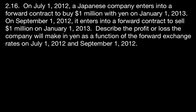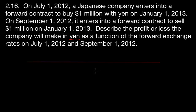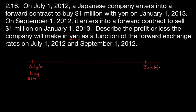So our profit and loss are going to be in yen — pay attention to that. Let's do our timeline so we can describe it a little better, keeping in mind that we're concerned about yen. In July of 2012, we entered into a forward contract to buy $1 million with yen, so we are long $1 million. If the US dollar increases in value against the yen, we win; if it decreases in value, we lose. That is for delivery in January of 2013.